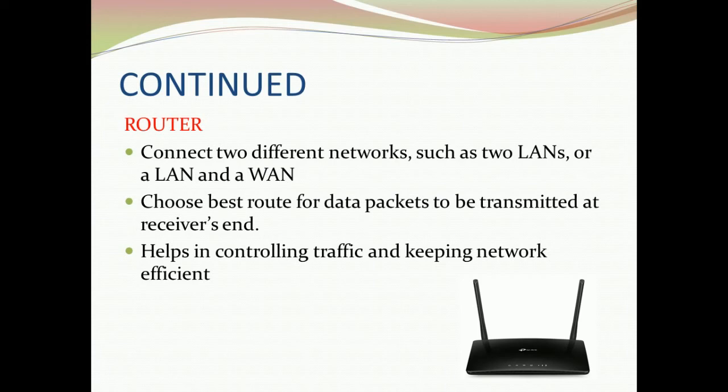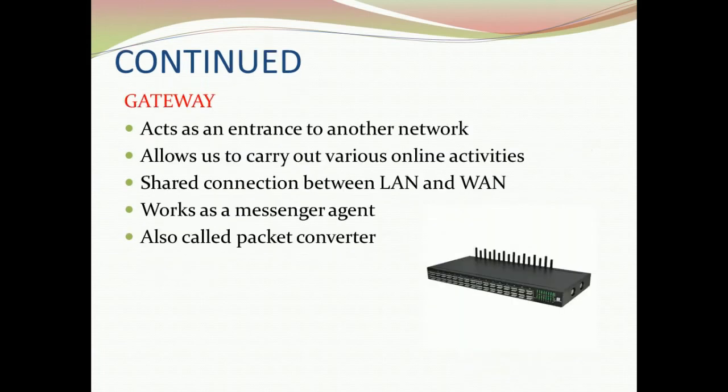What does traffic police do? When there is a lot of traffic on the road, the traffic police tells the best route to vehicle drivers — it divides the traffic into different routes, whichever is the best route for the particular vehicle. Similarly, a router also tells the best route to the data transmitting over the network, so network traffic gets divided between different routes.